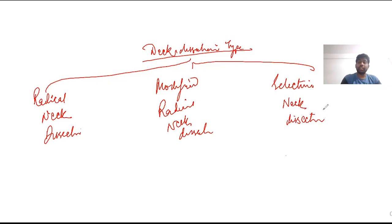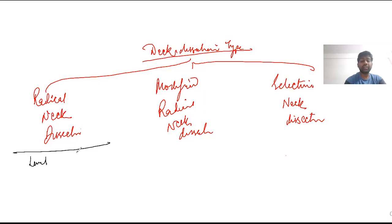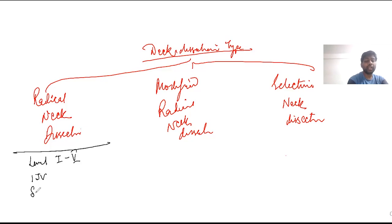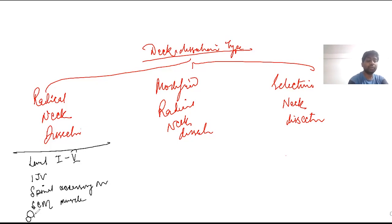In radical neck dissection, we remove level 1 through level 5 lymph nodes. Along with that, we remove three important structures from the neck: the internal jugular vein, the spinal accessory nerve, and the sternocleidomastoid muscle. We also remove the submandibular salivary gland.